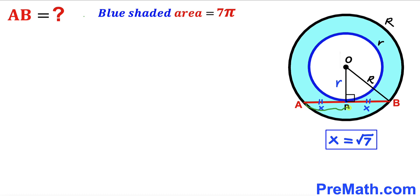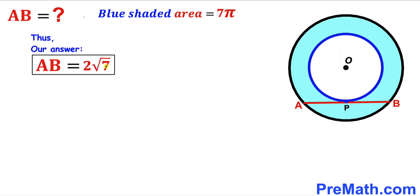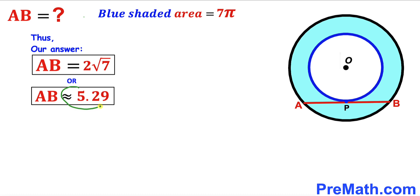Now we observe that the whole segment AB equals x plus x, which is 2x. So AB = 2x, and substituting x = √7, our segment AB length turns out to be 2√7 units, which is approximately equal to 5.29 units. That's our final answer.